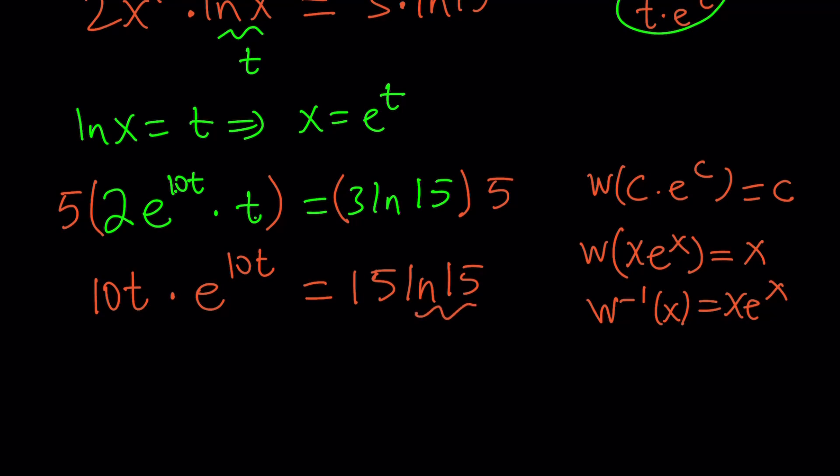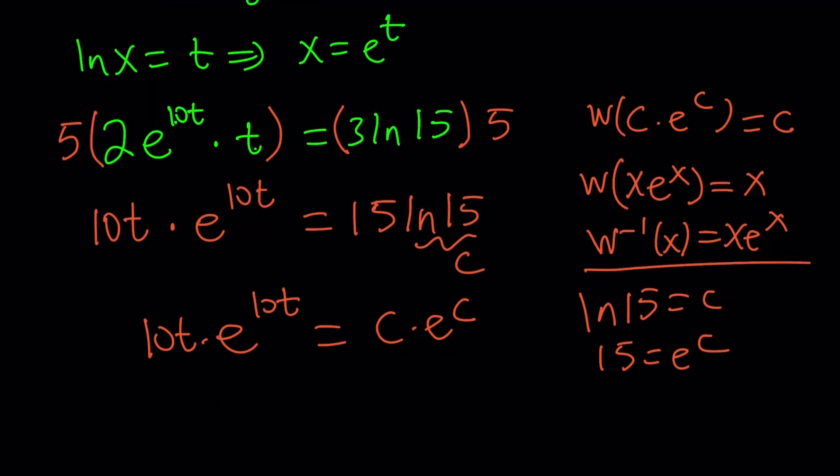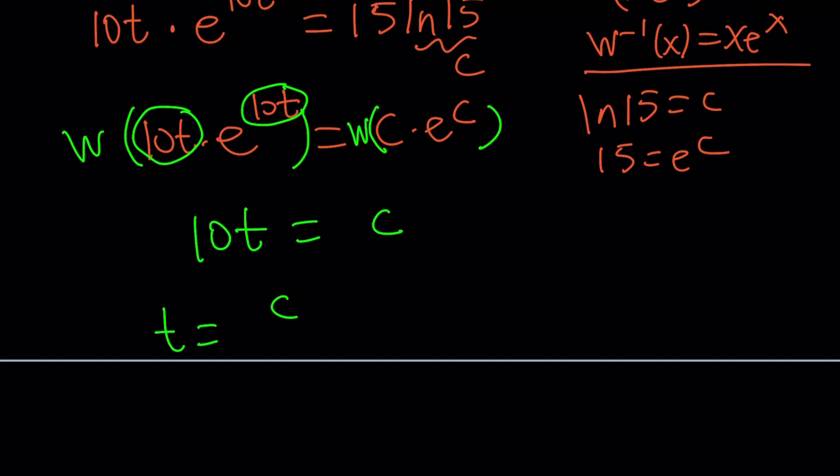Let's go ahead and put the right-hand side in that form as well. For that purpose, we can call this c. If ln 15 is c, then 15 is going to be e^c. I know 15 is a constant, c is a constant, but to be able to write it in that form will be nice. So this becomes c e^c. This becomes 10t e^10t. Now we're going to W both sides. W of x e^x, or c e^c is c. Whatever the argument is, in this case 10t is the argument, so this becomes 10t, and this becomes c. So t is c divided by 10.